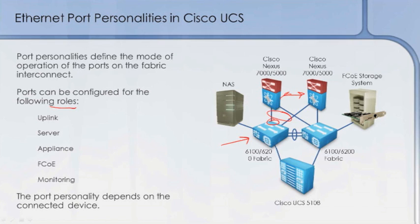The opposite of the uplink would be the downlink. What we sometimes call the downlink is a server port. This connects to our servers down below. We know that the 5108 is the enclosure that all of our blade servers are going to live within, and the server ports on the Fabric Interconnect are what's going to provide connectivity into those.